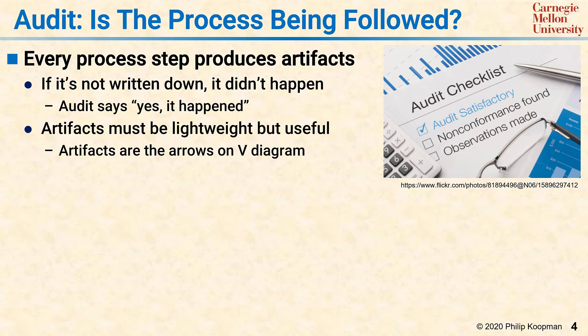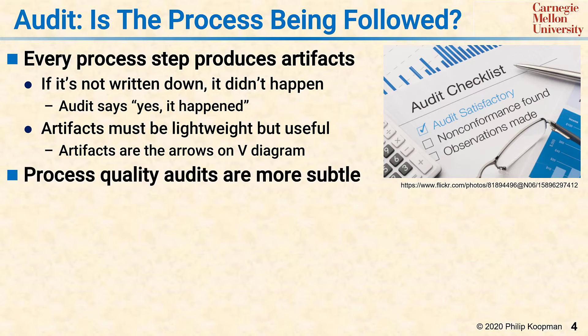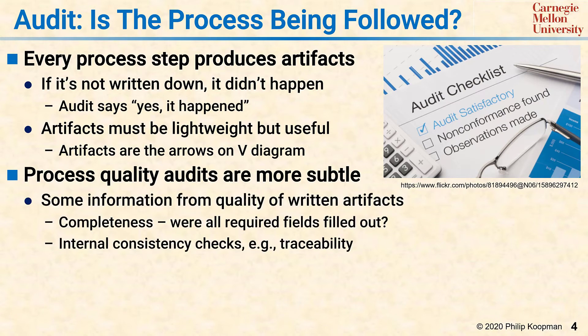Once you've determined that the process is actually being followed at least at that level, you might want to do some process quality audits. That involves whether the step got done effectively rather than just a box check. You can get some information from the quality of the written artifacts — if you have a form with all the required fields filled out — but you might also do internal consistency checks and traceability. These are not deep technical evaluations, but rather sanity checks to make sure the technical people are assumed to be working in good faith, but sometimes they get busy, distracted, or pressured and skip some pieces. The point of these audits is to know whether they're skipping pieces so that whatever caused that can be fixed.